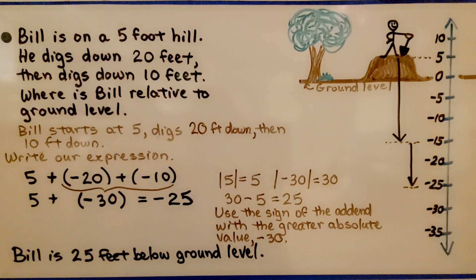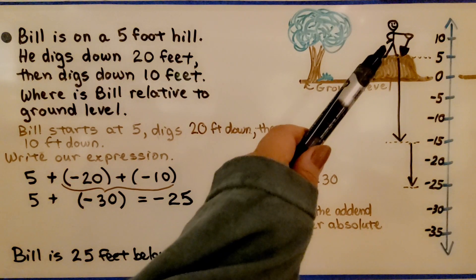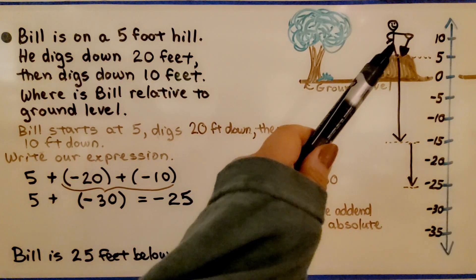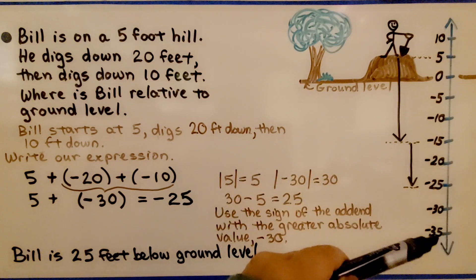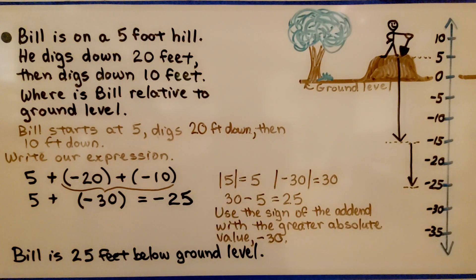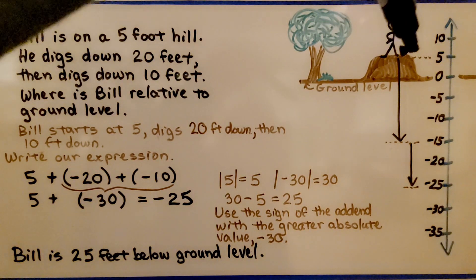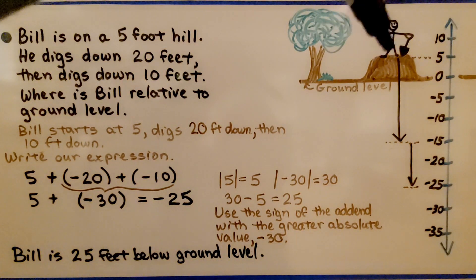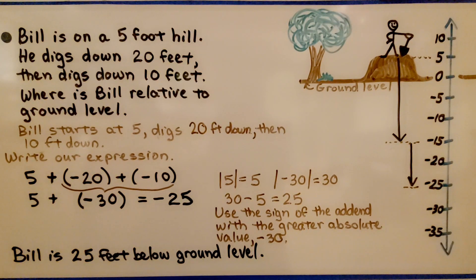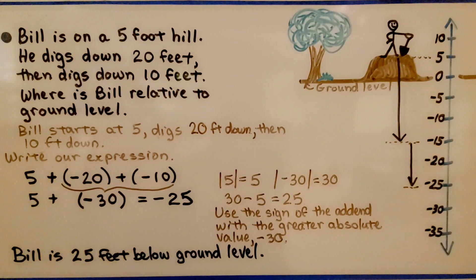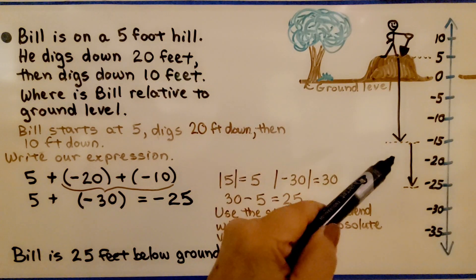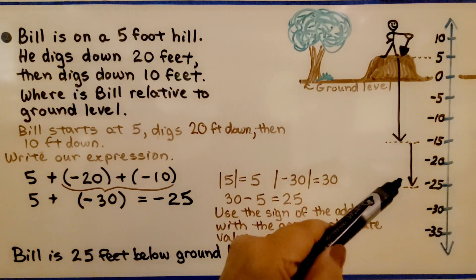Here we have another problem with another drawing. Here's Bill with his shovel — he's going to be digging. We have a vertical number line in increments of 5s. Bill is on a 5-foot hill. He digs down 20 feet, then he digs down 10 feet. Where is Bill relative to ground level? Bill starts at positive 5 because he's up on a hill, then he digs down 20 feet, then he digs down 10 feet.